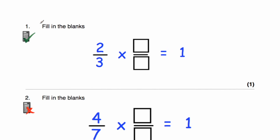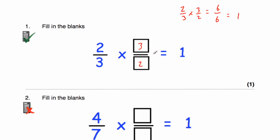Question 1 says fill in the blanks. We've got 2 thirds multiplied by something equals 1. If we take our fraction 2 thirds and flip it over, that gives us our reciprocal: 3 halves. A number multiplied by its reciprocal will always give you 1. Let's check: 2 thirds times 3 halves — multiply numerators: 2 times 3 is 6, multiply denominators: 3 times 2 is 6, and 6 divided by 6 is 1. So the reciprocal of 2 thirds is 3 halves.